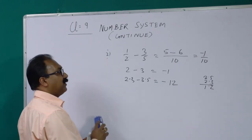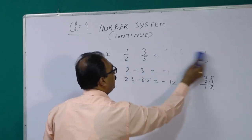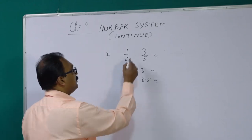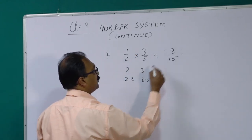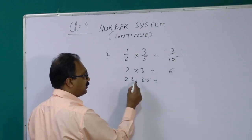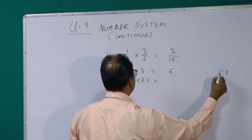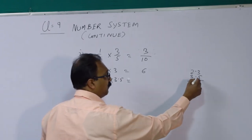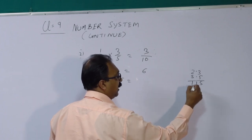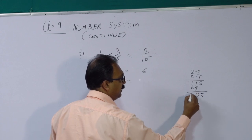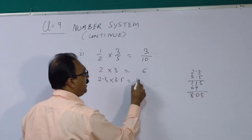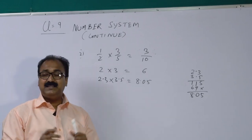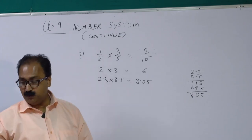Now we come to multiplication. Using the same examples with multiplication: 1/2 × 3/5 = 3/10, still rational. 2 × 3 = 6, rational. For 2.3 × 3.5, ignoring the decimal while multiplying: 23 × 35 = 805, then placing two decimal places gives 8.05. So the multiplication of two rational numbers is always a rational number.